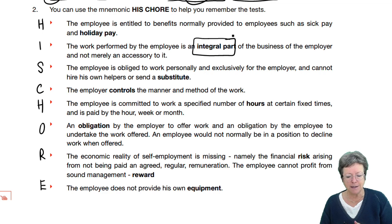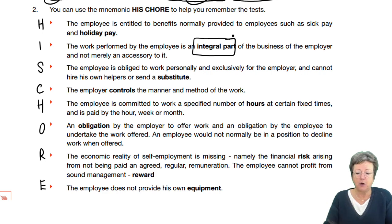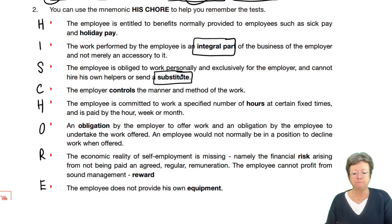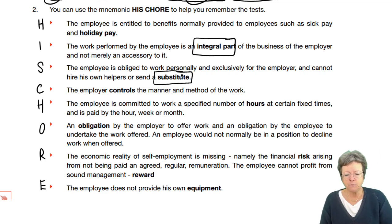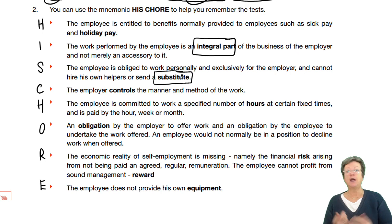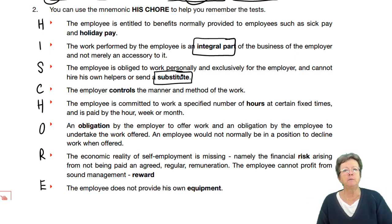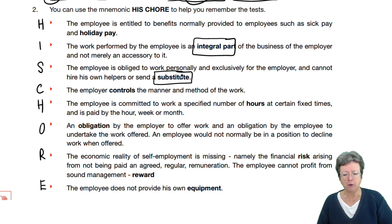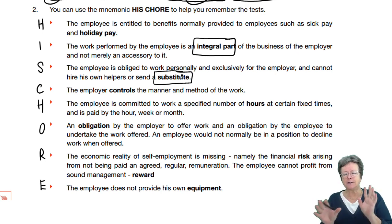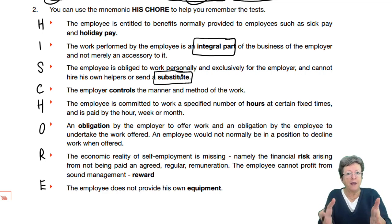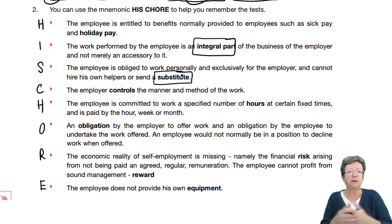S: The employee is obliged to work personally and exclusively for their employer and cannot hire his own helpers or send a substitute. So if you got a job working as a chef in a restaurant, you couldn't send your sister or brother to do your job for you. When you're there, you're there — you can't send somebody else to do the work for you.